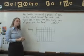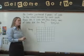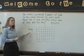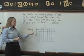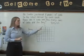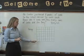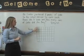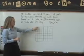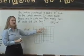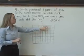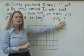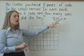Another common model of multiplication that we use is the use of an array. An array is an arrangement of columns and rows that create smaller squares. The total number of smaller squares gives us the product to our answers.